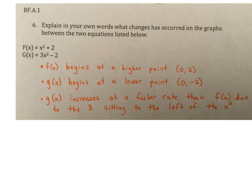All right. Number six, explain in your own words what changes has occurred on the graphs between the two equations listed below. So here they gave you two quadratics. Again, great first step. Type it into your Y equals in your calculator to graph them, to look at the graphs. You could also look at the tables in that sense. But when you look at the graphs, okay, we see the following stuff. F of X, this first one, begins at a higher point at zero two. That's where the vertex of F of X is. You could have said it has a higher vertex.